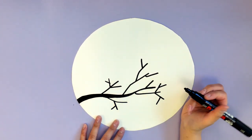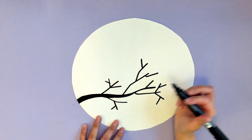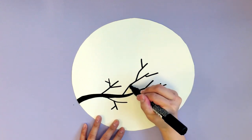Just like we did for our main tree branch, we're going to do the same thing to the smaller branches. We're going to make it thinner towards the top and thicker towards the bottom.